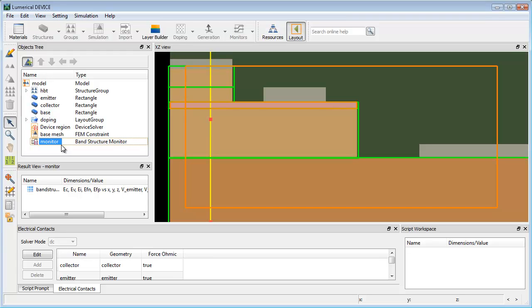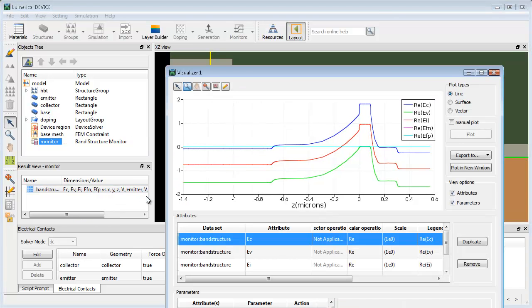Once the simulation is complete, I can easily select the band structure result for visualization. Selecting the band structure monitor and choosing the band structure result from the result view, I can easily visualize the band structure and look at the conduction band, valence band, quasi-Fermi levels, and other key properties of the heterostructure device.